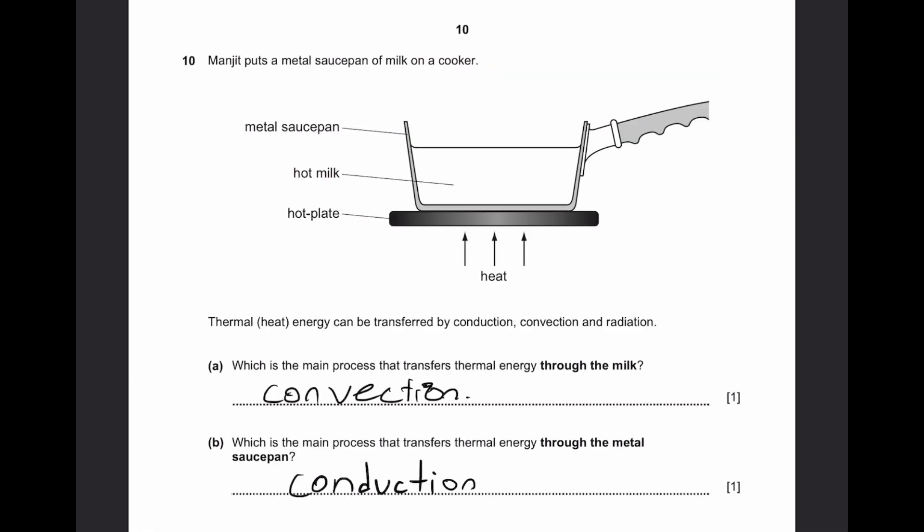Question 10. Manjit puts a metal saucepan of milk on a cooker. Thermal energy can be transferred by conduction, convection, and radiation. Part A. What's the main process that transfers thermal energy through the milk? Through the milk, it is convection. Part B. Which is the main process through the metal saucepan? That'll be conduction.